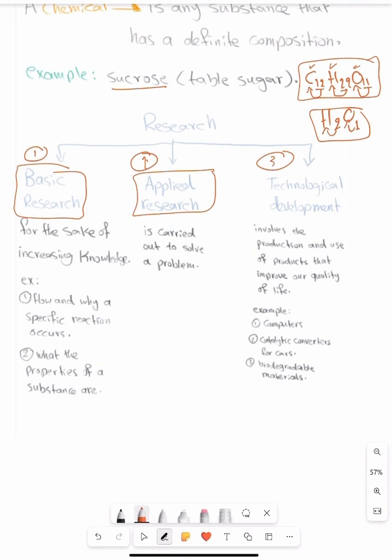For example, technological development, we use devices such as computers. Number one, computers. Number two, catalytic converters, for example, in cars, in order to not give us toxic gases. Biodegradable materials, for example, instead of plastic, we use them, which will be better for us in the future, for the environment as well.